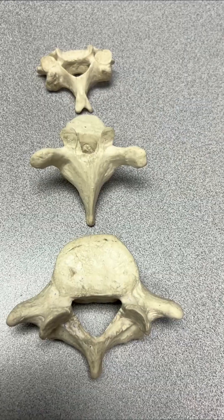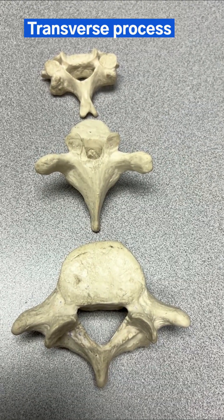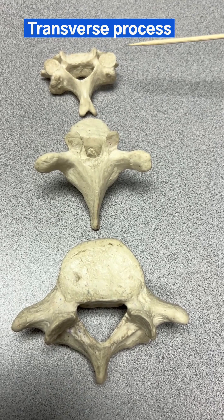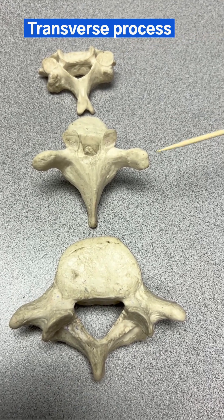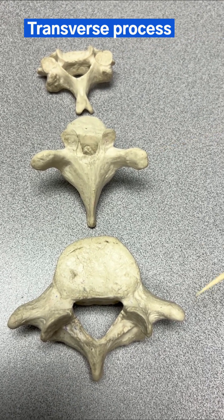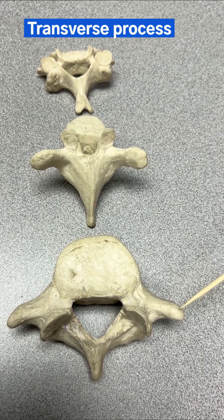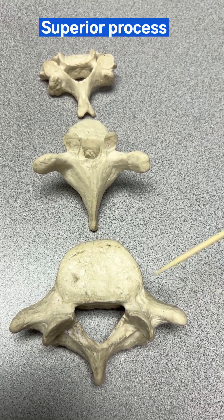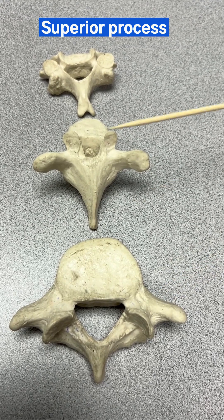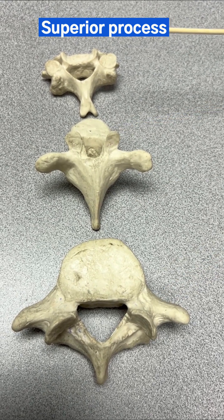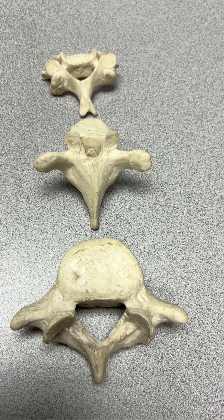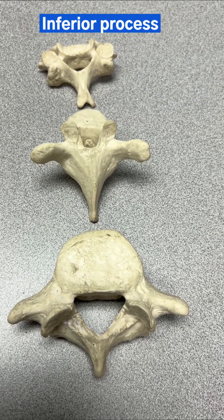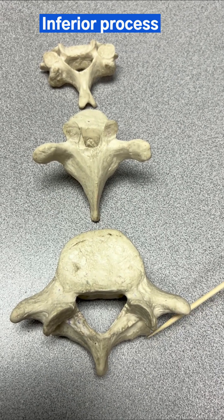Looking from the posterior side, we have the transverse processes on each side. Then at the top of each vertebra we have the superior processes. Then at the bottom of the thoracic and the lumbar we have the inferior processes.